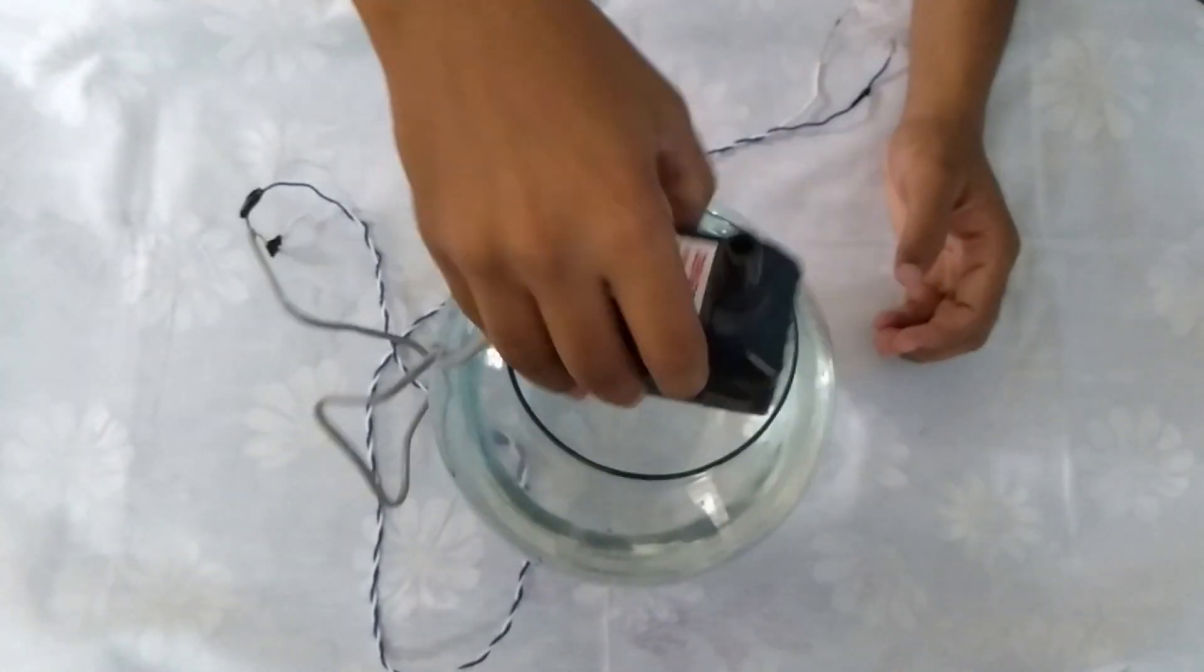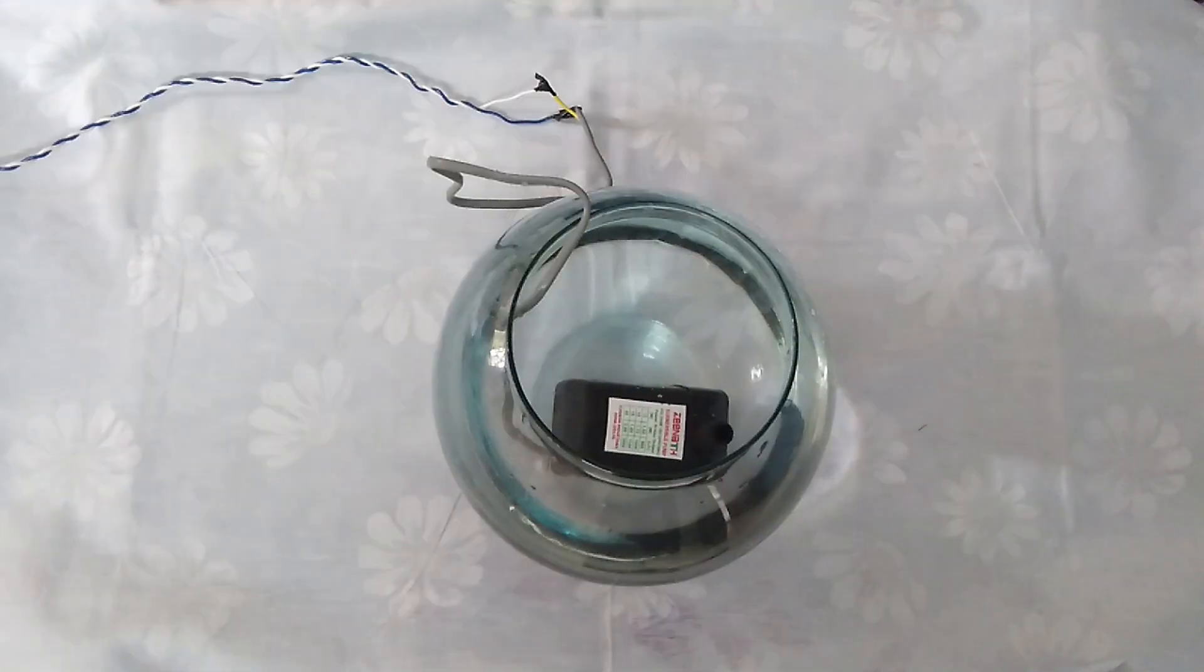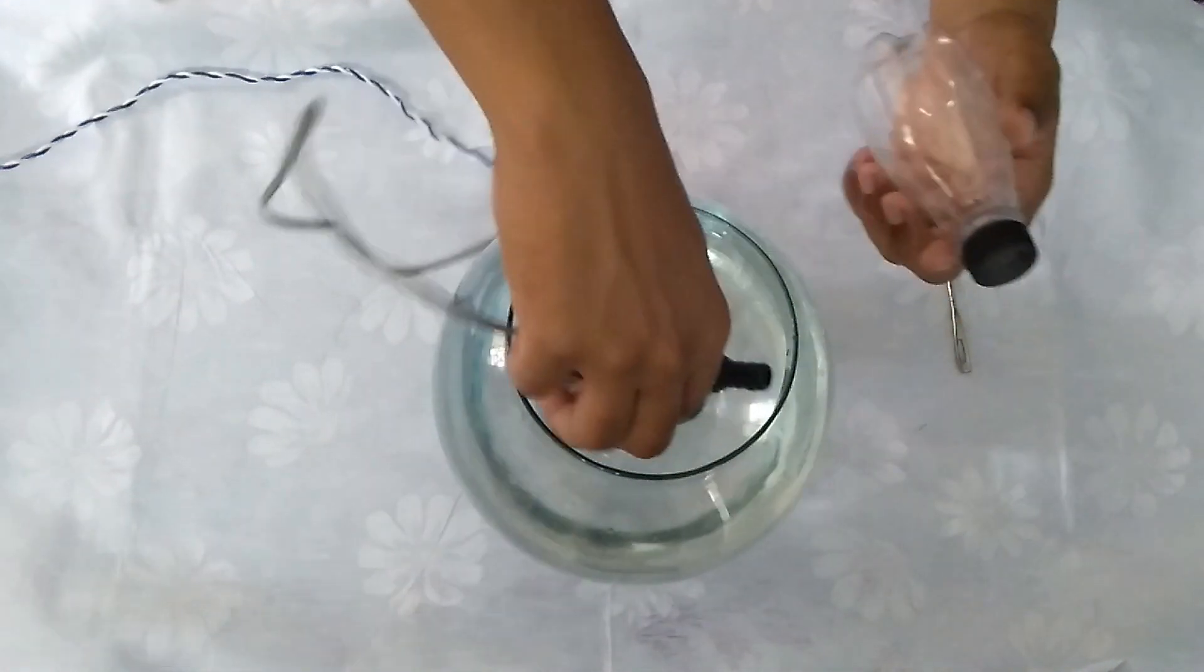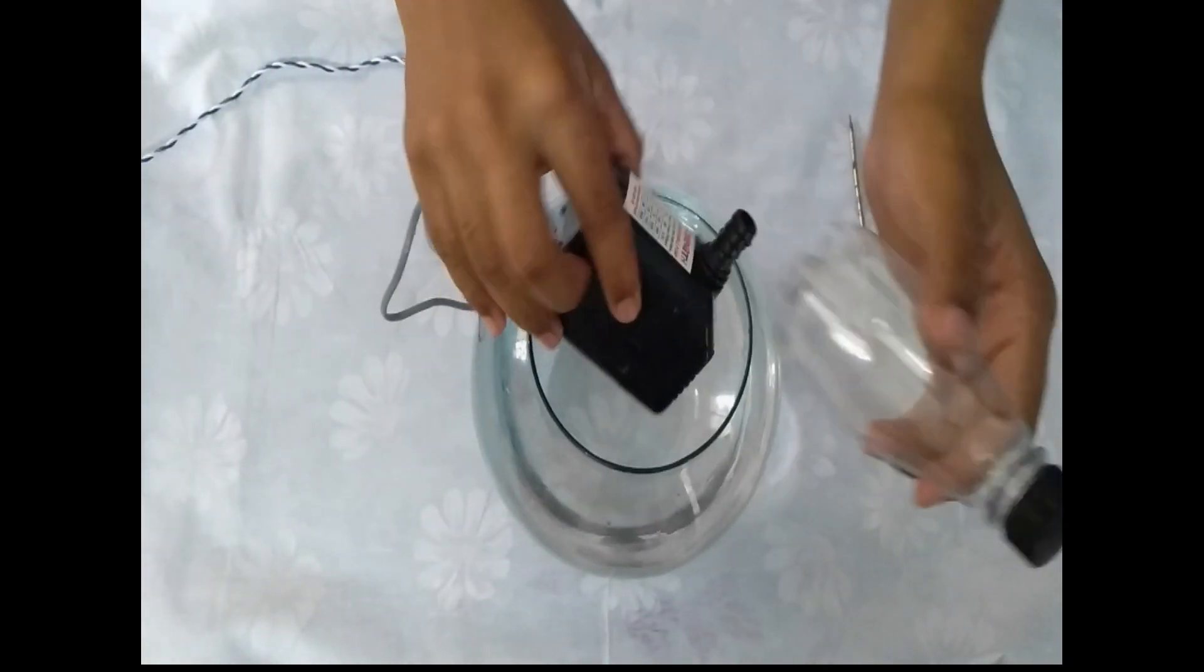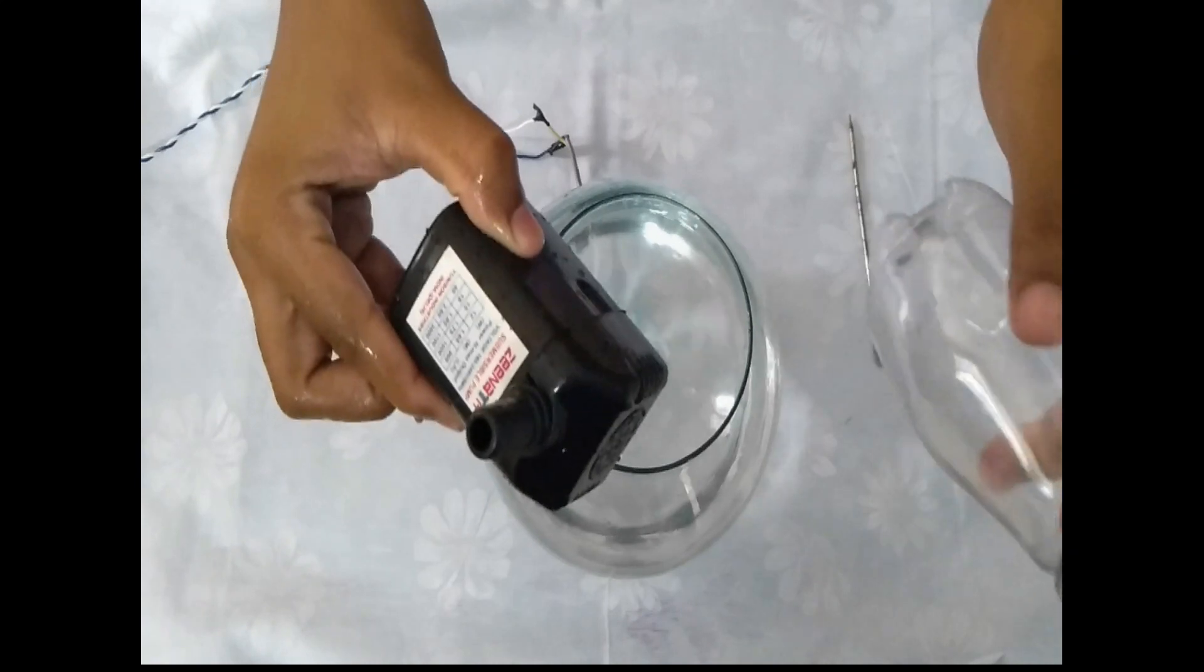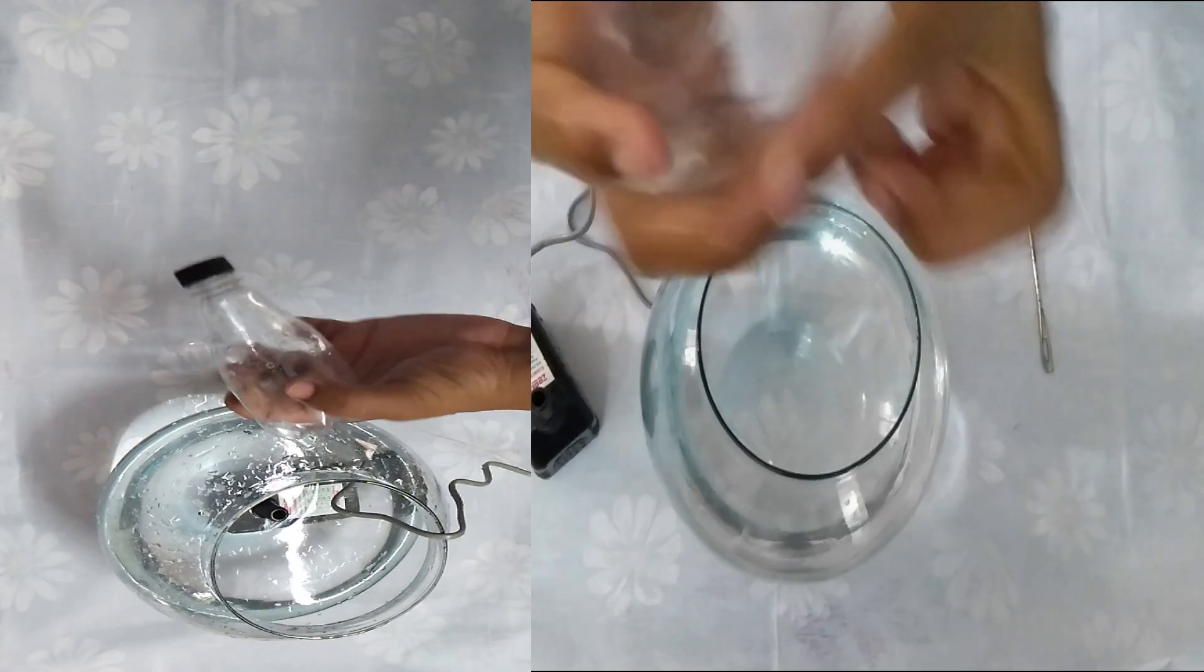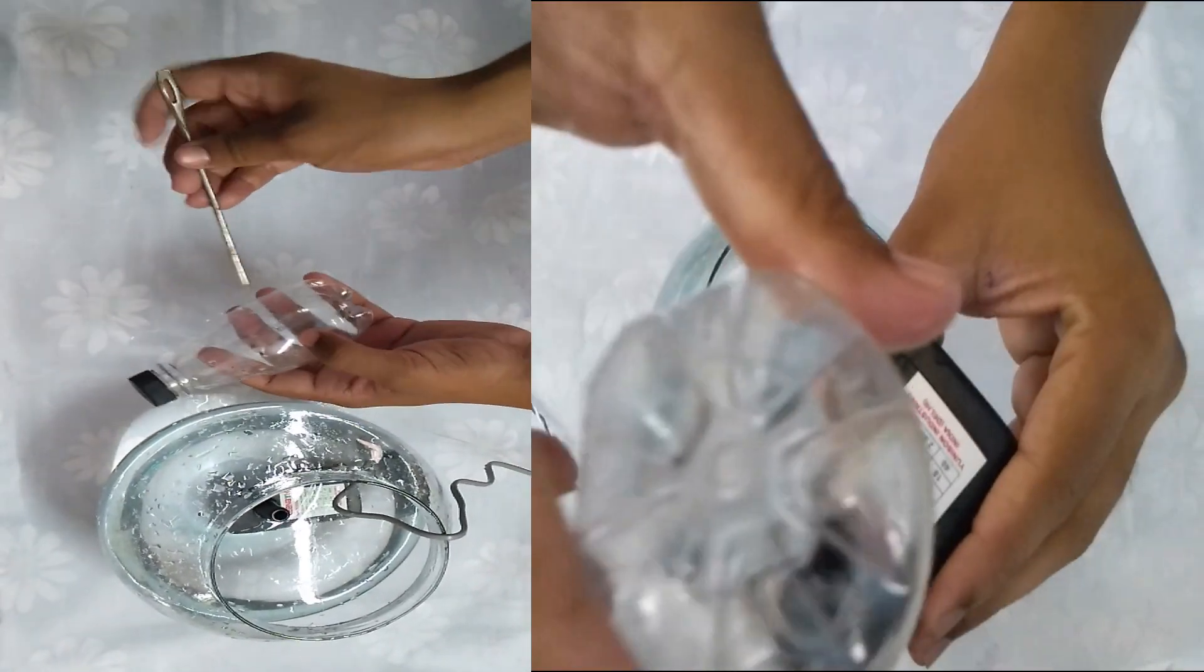Then we have to put this DC motor into the glass ball. After that, we take one iron needle. Then we fix the DC motor with a plastic bottle. Before that, we will make some holes on the plastic bottle with the help of the iron needle. After, it will look like this.